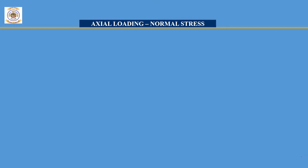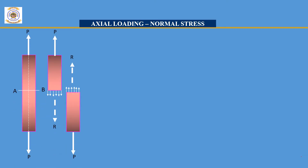There are two types of stresses: one is normal stress and another one is shear stress. To define the normal stress, let us consider a bar which is subjected to load P on both sides of the bar in the opposite direction, and let us consider a section A-B which cuts the bar into two parts.